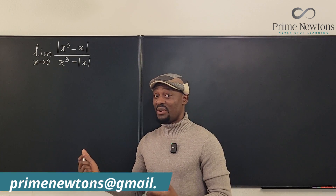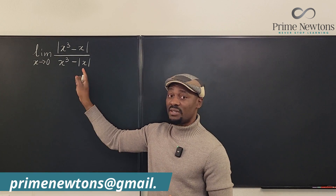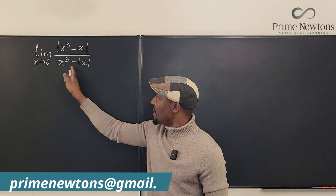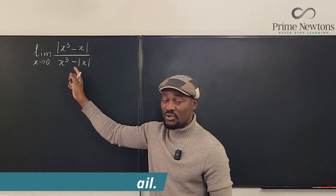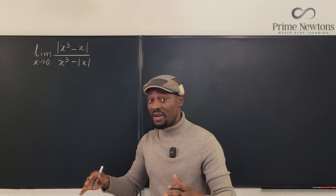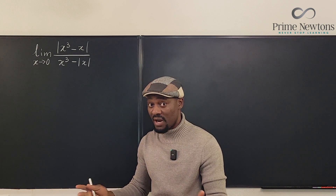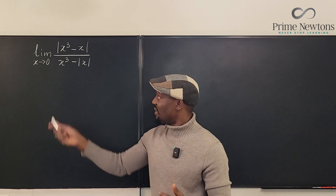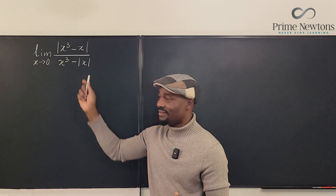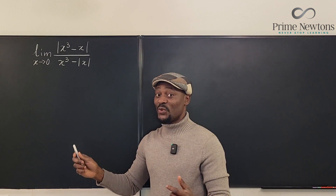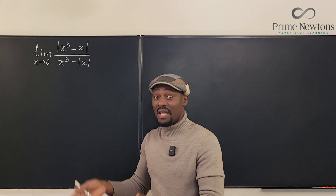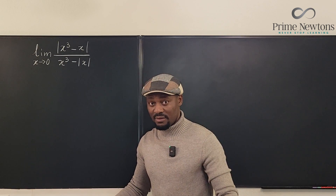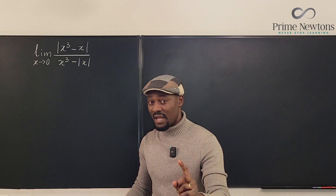In this case you cannot plug in zero because this function is not defined at zero — you can see the denominator. If you put zero in the denominator of a rational function, that's a problem. Also, you cannot plug in one; if you plug in one you're going to get zero too. So there are certain points you can't just plug in, even if it looks like you'll get your answer. Pay attention to that.